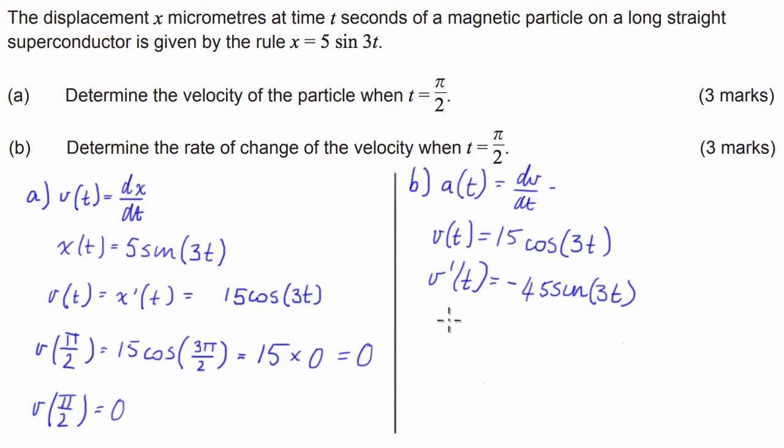And then what we do is we evaluate a, we can do this first just to make it easier to understand, a is equal to negative 45 times the sine of 3t. We then evaluate acceleration when time is equal to pi over 2.